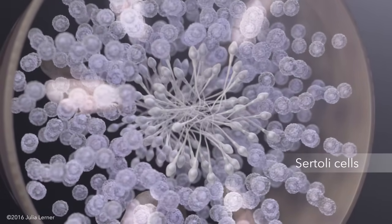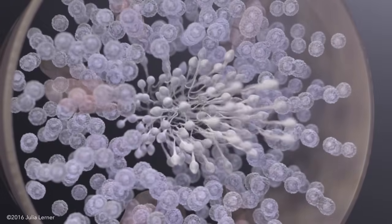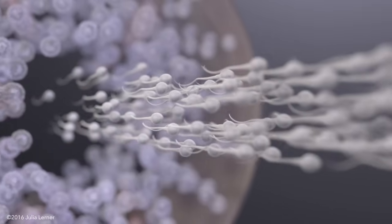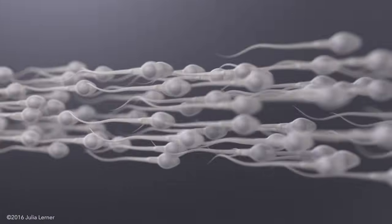The sperm cells break free from the sertoli cell lining of the tubules into the lumina. The sperm cells are then stored in the epididymis where they functionally mature.